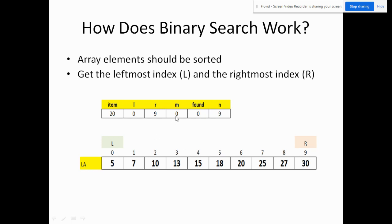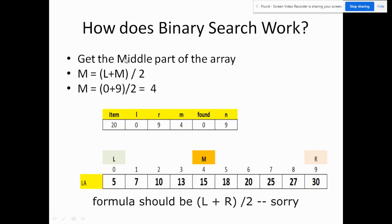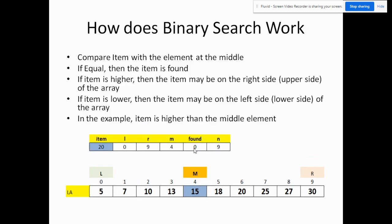m is the middle index, which we haven't computed yet. The flag 'found' is initially zero, meaning we haven't found the item yet. n is 10, the number of elements. To get the middle index, the formula is l plus r divided by 2, which is integer division. So zero plus nine divided by 2 equals 4.5, but since it is integer division the fraction is truncated, giving us m equals 4.